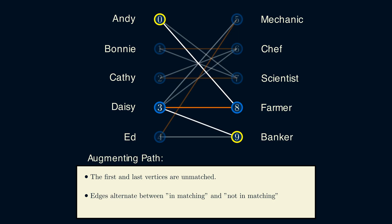Here's another example of an augmenting path, which is a bit longer. The path alternates between being in and out of the matching. Again, we can swap along this path. So Ed is matched to Banker, and unmatched to Mechanic. Daisy is then matched to Mechanic, and unmatched to Farmer. Then we can match Andy to Farmer.